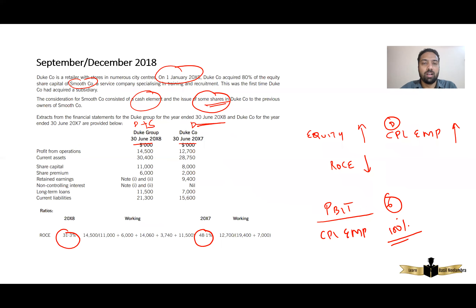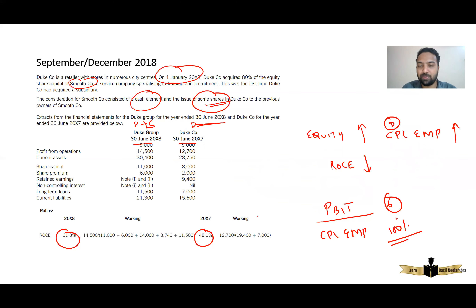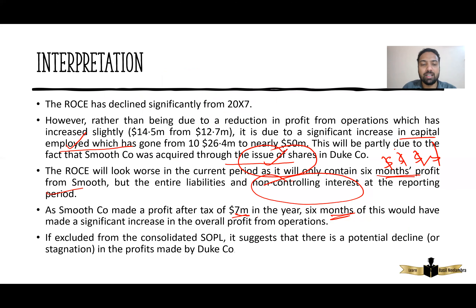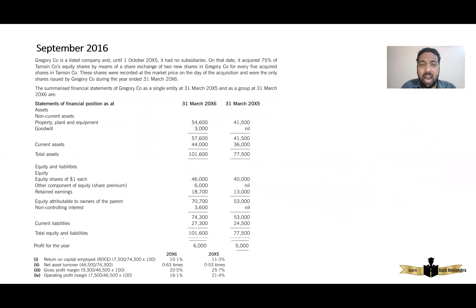In the September/December 2018 question, it was stated that the subsidiary company made a profit of seven thousand. So if you remove the profit of that subsidiary company, you can write accordingly based on that question. Just download the question paper and read it yourself to get an idea.